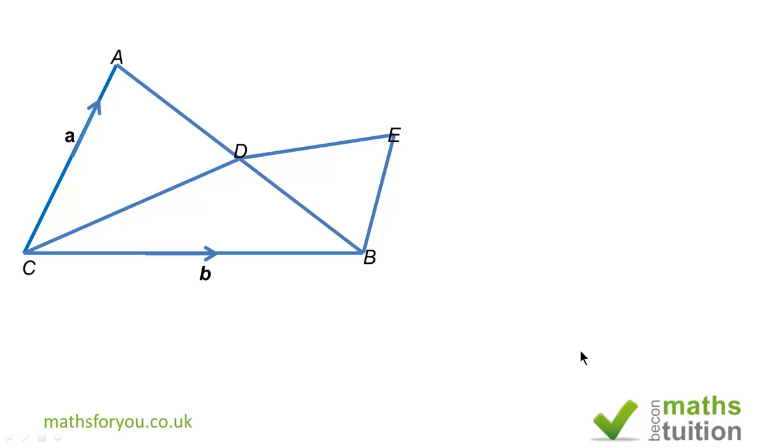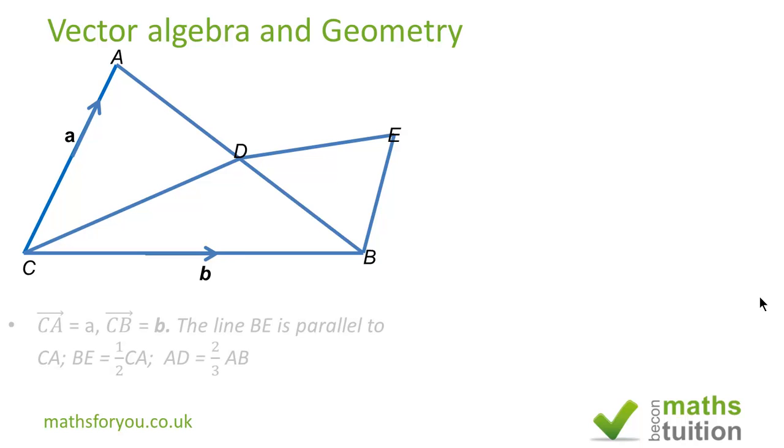Right, now here is the diagram for the question and there are a few facts or information given with this diagram. It says that Vector CA is equal to a and Vector CB is equal to b. The line BE is parallel to CA and BE is half of CA and AD is 2 thirds of AB.